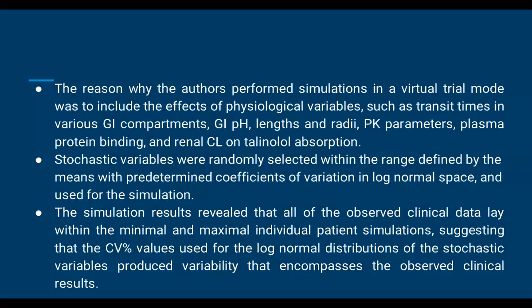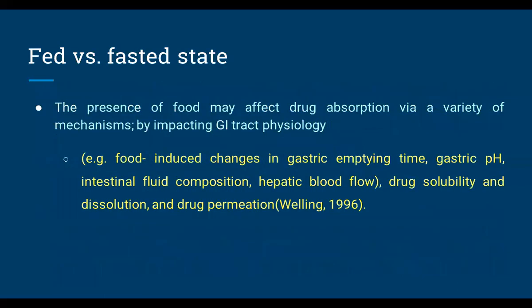The simulation results revealed that observed clinical data lay within the minimum and maximum individual patient simulations, suggesting that the CV percentage values used in the log-normal distribution of stochastic variables produced variability that encompasses the observed clinical data. This example shows that the current study data aligns with the literature observed data. Next, the pharmacokinetic model used for fed and fasted state is very important in terms of physiological and other parameters.